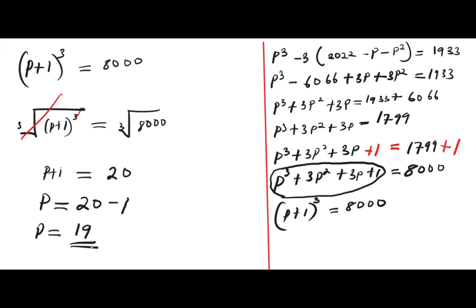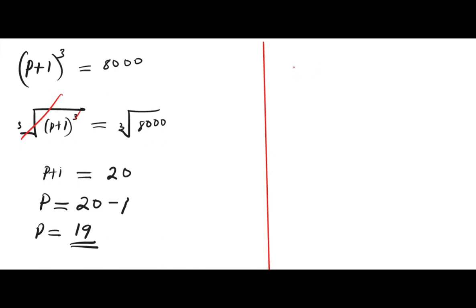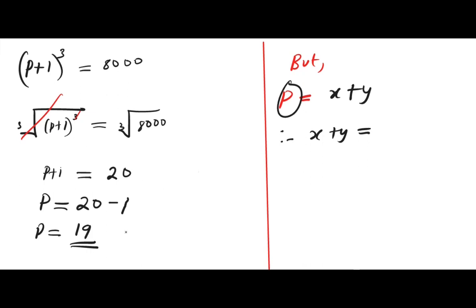Our p equals 19, but remember that p equals x plus y. Therefore x plus y equals p equals 19. So the value of x plus y equals 19. This is the final answer. We have come to the end of the class. Please don't forget to like the video and subscribe to my YouTube channel, and click on the notification icon for updates. Thank you, and bye!